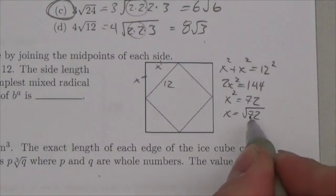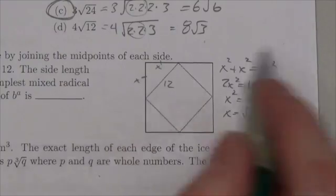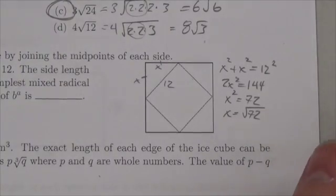we get x is equal to the square root of 72. Now normally I'd write plus or minus, but because we are dealing with the side of a square, it's got to be plus.